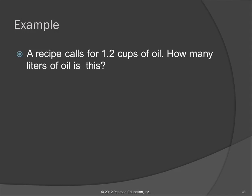So let's do some examples. A recipe calls for 1.2 cups of oil — how many liters of oil is this? This is one that we could end up with different paths. We read through the question and we're trying to figure out what are we starting with and what are we trying to end up with. Well, there's this number: 1.2 cups. That's the only number in the problem, so that's probably where we're starting. I'm going to put that at the beginning of my map.